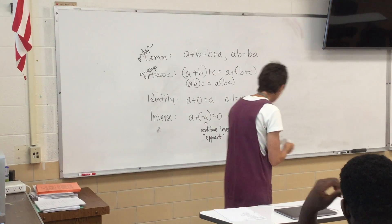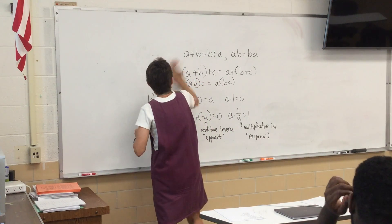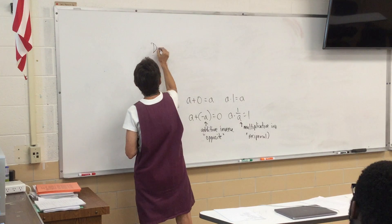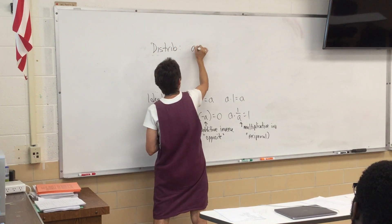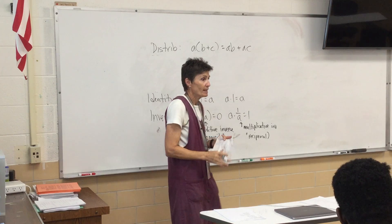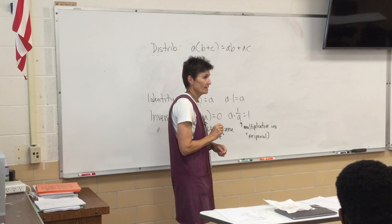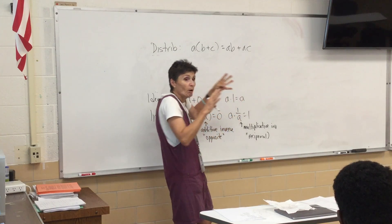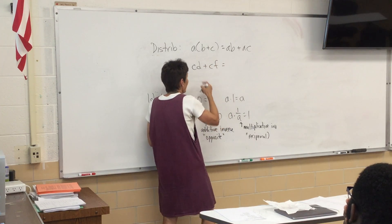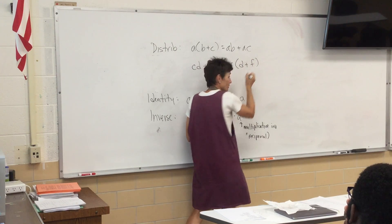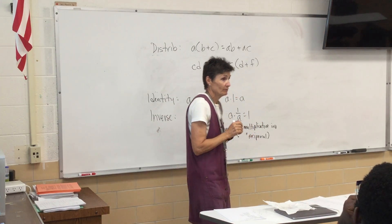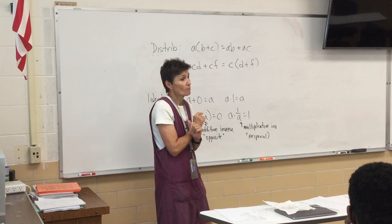Alright, then we have the distributive property. What does it look like? Perfect. Now what I want you to understand is that this property works both ways. If I start with cd plus cf, I could factor out that c — that's still the distributive property. Every time you factor, you're doing distribution backwards.